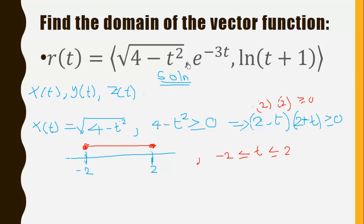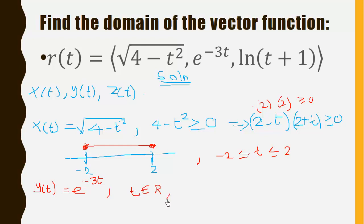Now we find the domain of y(t). y(t) is an exponential function, e to the power negative t, and this function is continuous everywhere. So t belongs to all real numbers, which in interval form is negative infinity to positive infinity.